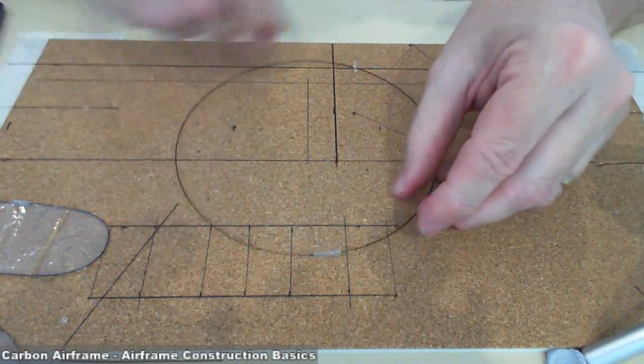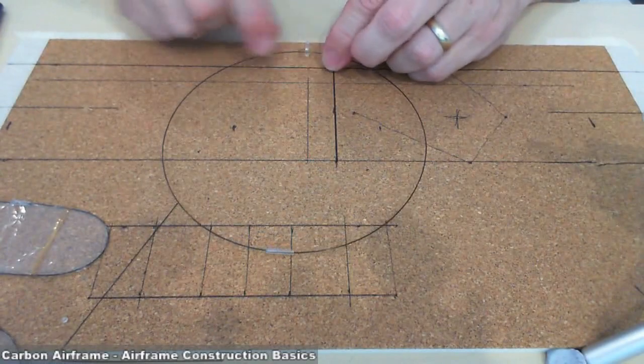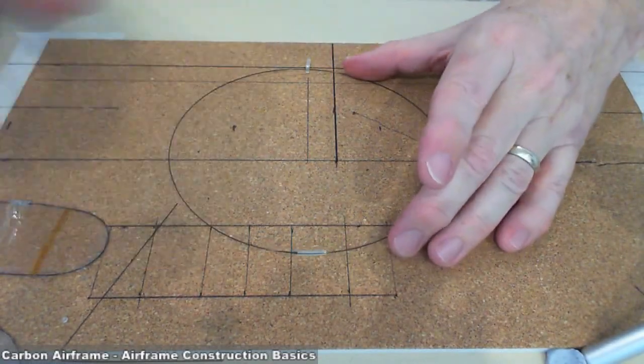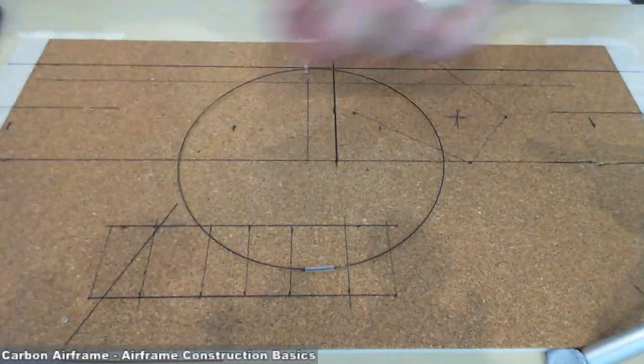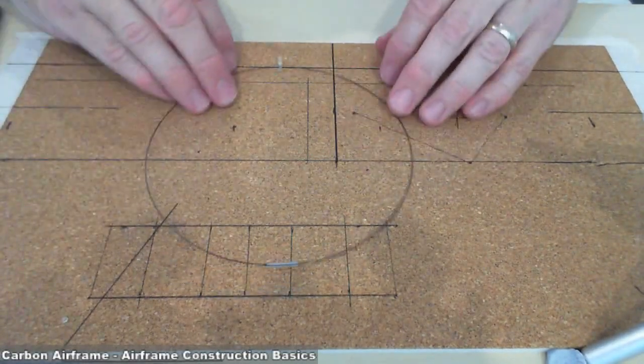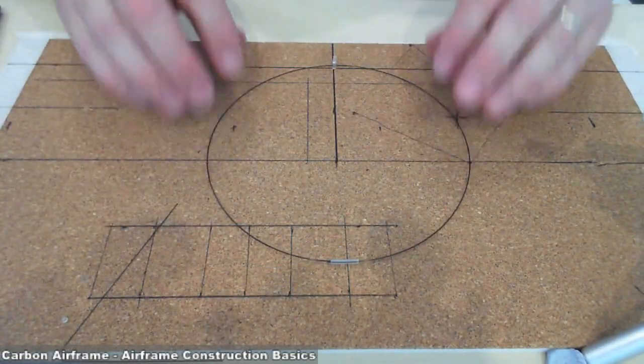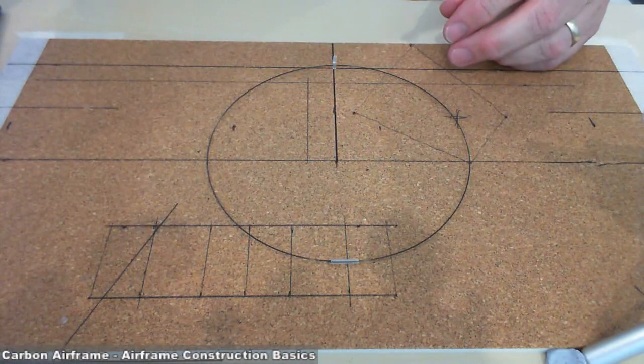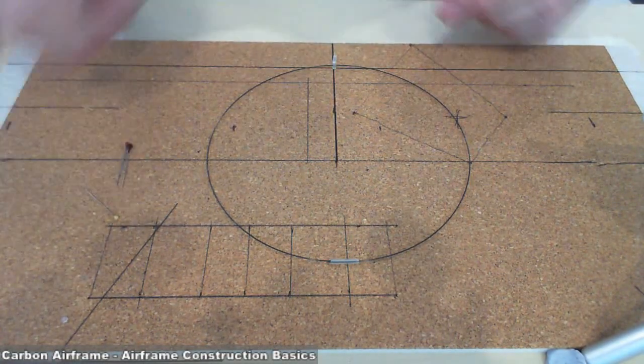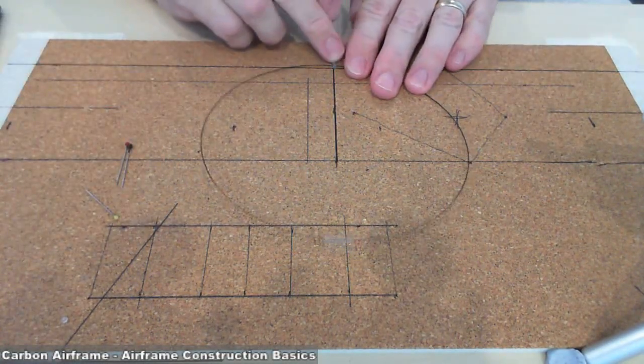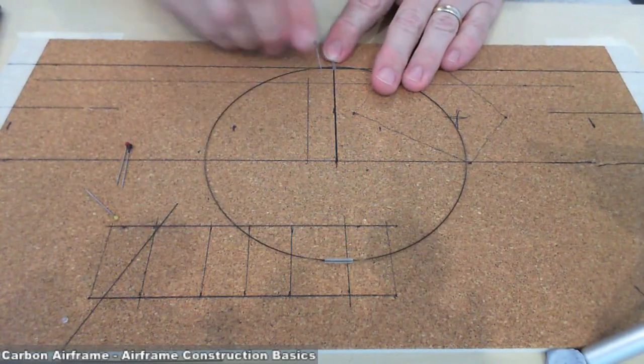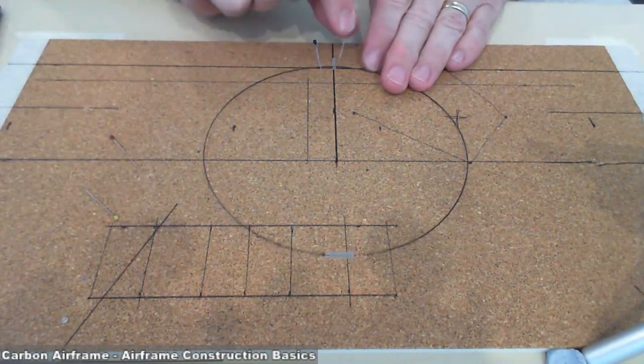Right, so that's the circle we're going to use to make our control surface. Okay, I'll use this template right here. So the first thing we need to do is actually pin it down a little bit. So this time we're just going to put some pins on either side.